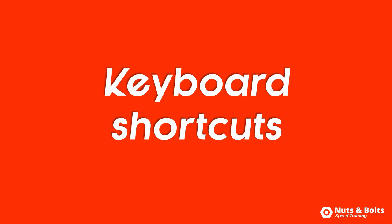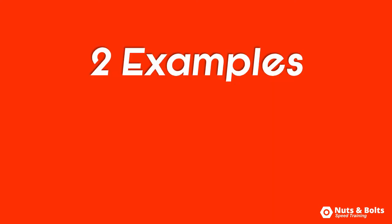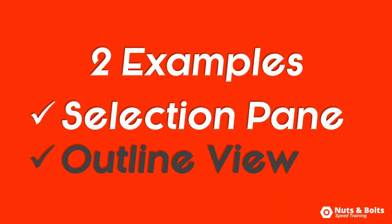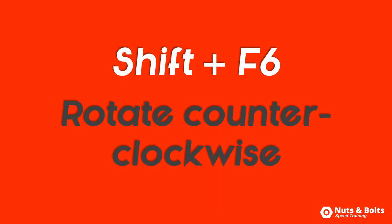So those are your keyboard shortcuts for rotating the active windows in PowerPoint, with two examples — the Selection Pane and the Outline View — that are useful when using these shortcuts. F6 rotates you clockwise through your active windows, and Shift+F6 rotates you counterclockwise through the active windows within your presentation.